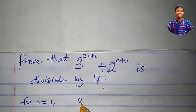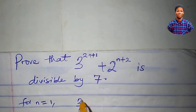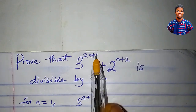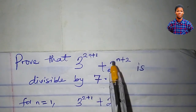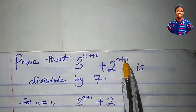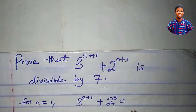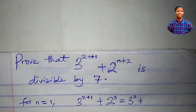So we have 3 to the power of 2 times 1, which is 2, plus 1 — giving 3 to the power of 3. And 2 to the power of n is 1, so 1 plus 2 is 3, giving us 2 to the power of 3.